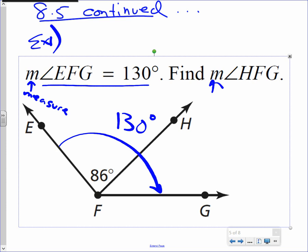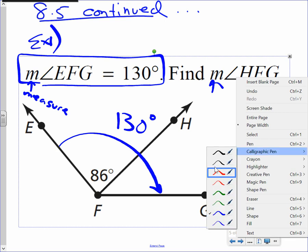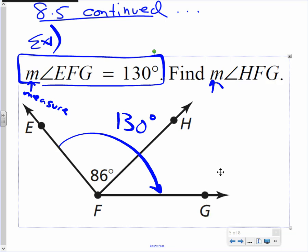That's what they're giving us right here, and our mission Rodriguez is to find angle HFG. Let me highlight that in red. HFG is this angle. How big is that angle? That's the question. That's what they want us to find.